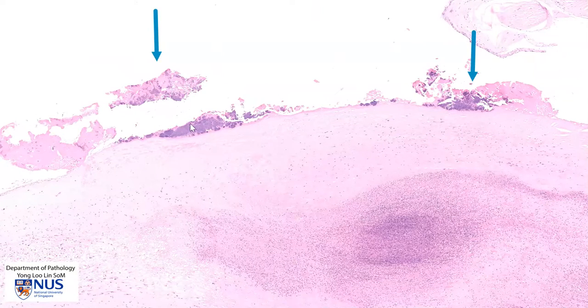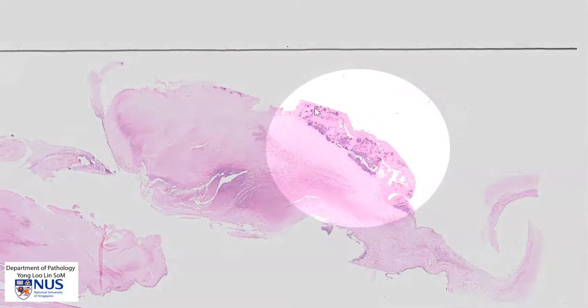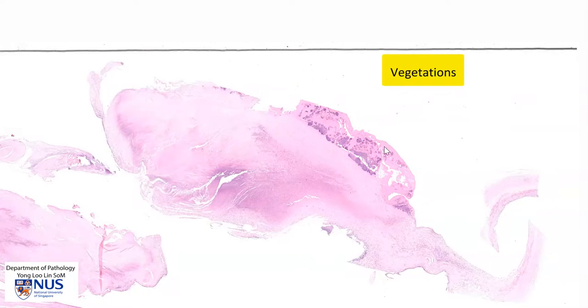We have a focus of acute inflammation with necrosis within the valve itself, and if we look at the surface of the valve, we can see some pink and blue deposits. This is actually seen better in this other piece here, where we can see this whole area of pink and blue deposits on the surface — and these are actually vegetations.